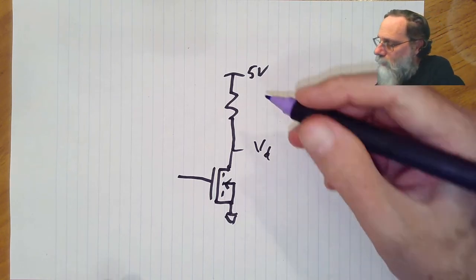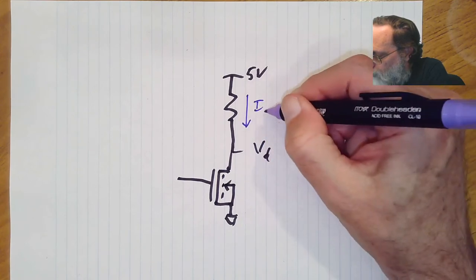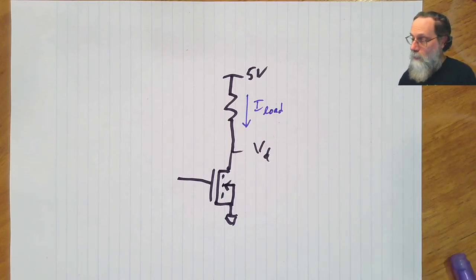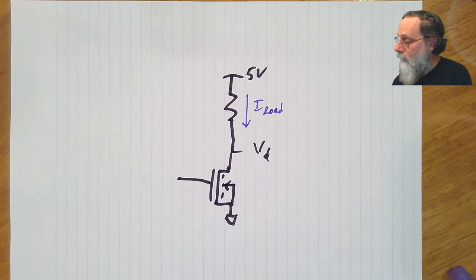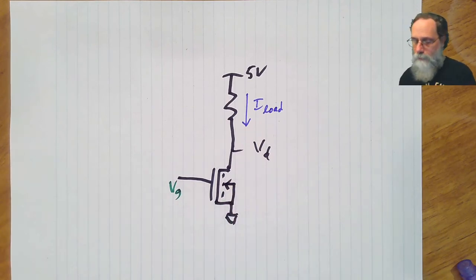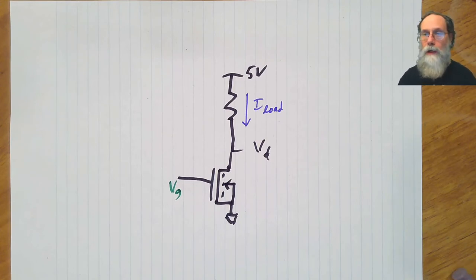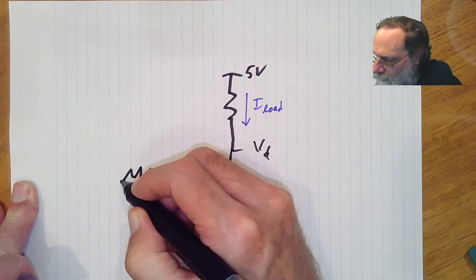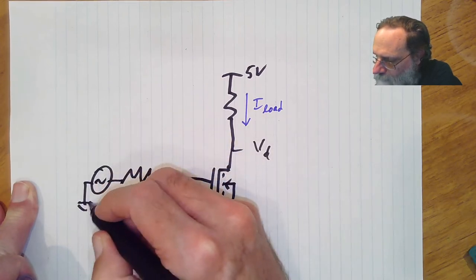We're also going to be interested in looking at the current through the load, and of course the control value here is going to be the voltage on the gate. Now, in order to increase the clarity of the signals we're going to look at, I'm not going to drive this gate directly with a function generator. I'm going to run it through a resistor here and take that from the function generator.